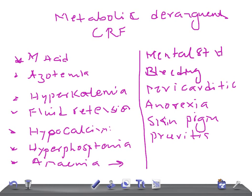Patients are also susceptible to infection. So these are the important metabolic derangements in CRF: metabolic acidosis, azotemia, hyperkalemia, fluid retention, hypocalcemia, and hyperphosphatemia. Especially try to concentrate on hypocalcemia, hyperphosphatemia, and hyperkalemia — the rest you can remember as they are straightforward.